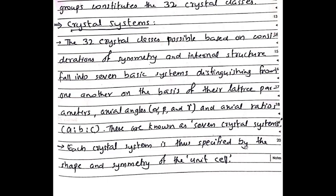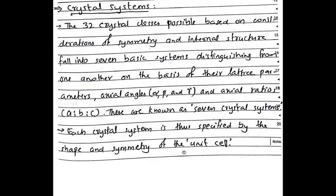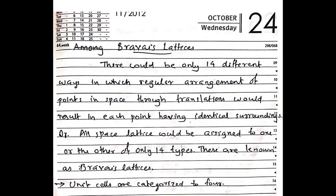Each crystal system is specified by the shape and symmetry of the unit cell. The next concept is Bravais Lattices. There could only be 14 different ways in which a regular arrangement of points in space through translations results in each point having identical surroundings. All space lattices are assigned to one or the other of only 14 types, known as Bravais Lattices.